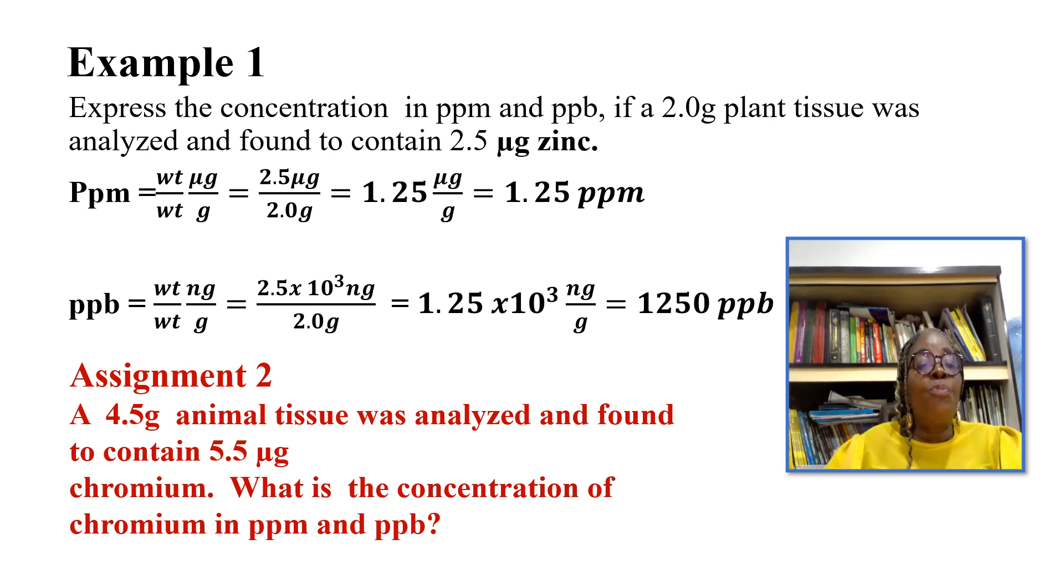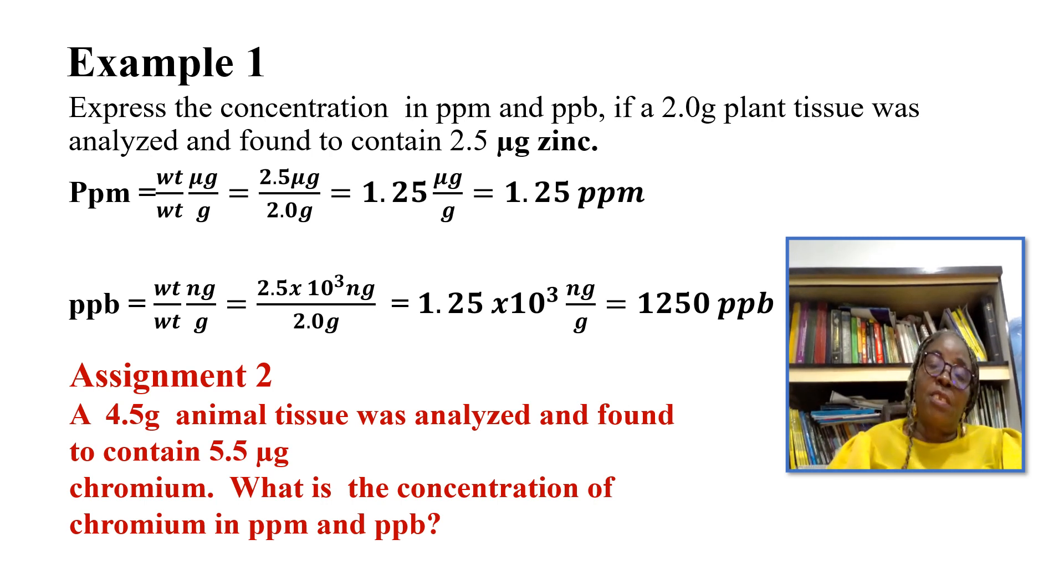So you represent your ppm as weight per weight in that measurement, micrograms per gram, which also represents parts per million. The 2.5 micrograms zinc will place it up, divide by the 2.0 grams and you will get 1.25 micrograms per gram. This unit is equivalent to 1.25 parts per million.